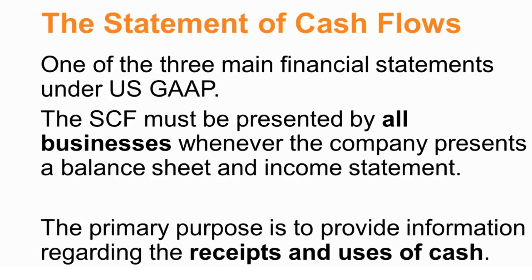The primary purpose of the statement of cash flows is to give information about where the company receives its cash from and what the company spends its cash on — where the cash comes from and where the cash goes. We take every single transaction that involved cash during the period and present them in an organized way that's useful for people using the financial information. We classify each of those transactions as one of three activities.